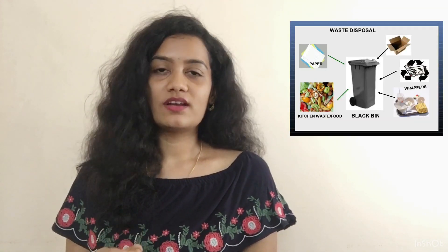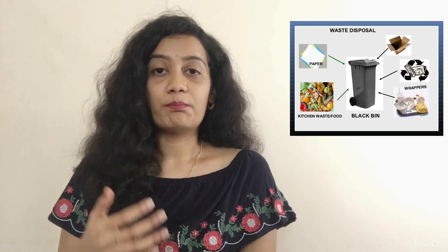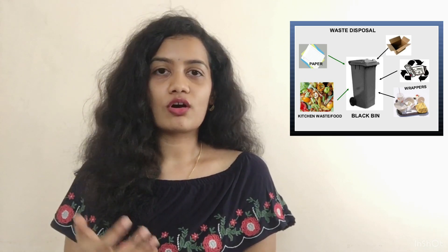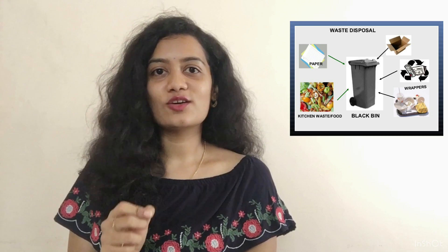The white bag is used to dispose of sharp or metal objects like needles and scalpels, and these have to be treated by autoclaving or dry heat sterilization. The black bin is used for general hospital waste such as paper waste or food waste, and it has to be decomposed in a secure landfill.